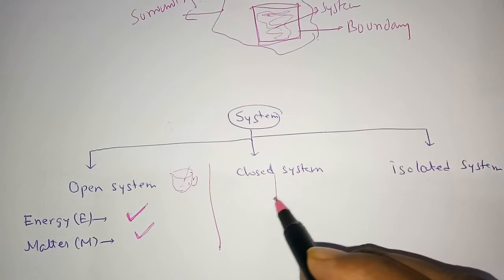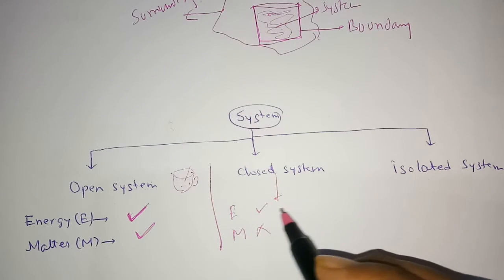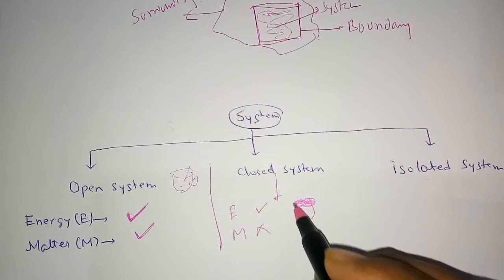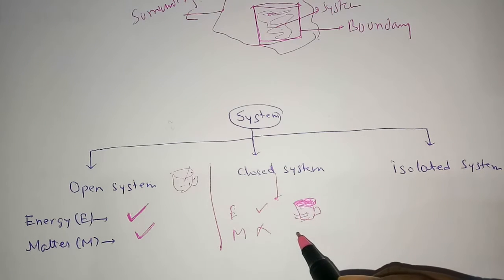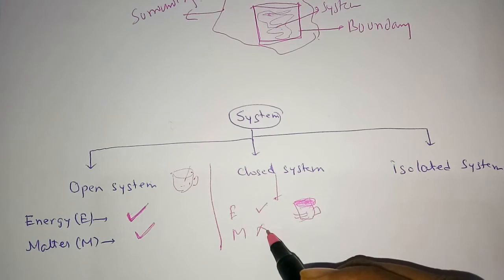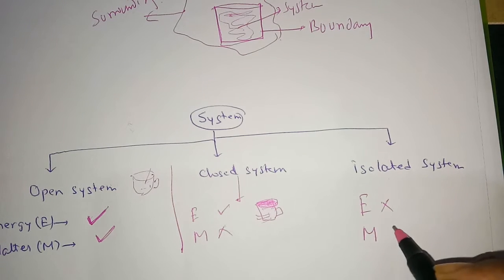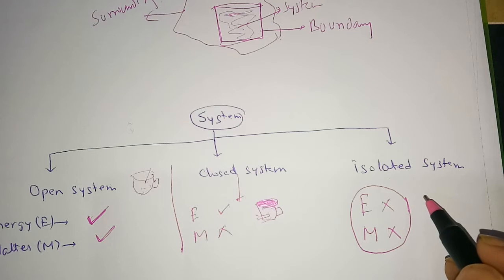In a closed system, you can get energy but you are not going to get matter. For example, if you have a cup of tea with a locked lid, touching the walls of that cup gives you energy, but you don't have access to the matter. In an isolated system, we are not going to get energy as well as matter — both things are missing. For example, tea given in a thermos flask: you are not going to get energy or matter.